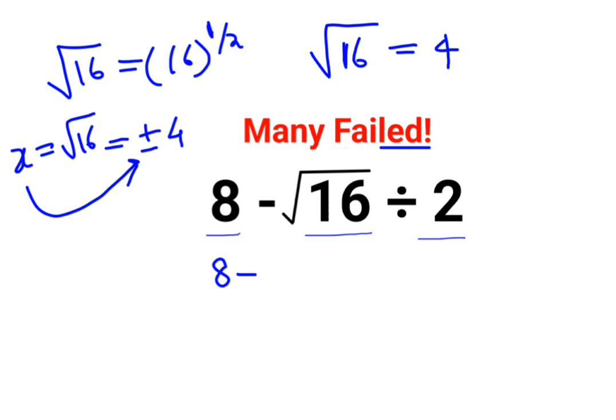But since in this case there was no variable involved, we will say root 16 is just 4 divided by 2. So now a lot of people think that this is supposed to be done in this way: 8 minus 4 that gets you 4 divided by 2 that gets you 2. Now this is where a lot of people went wrong.